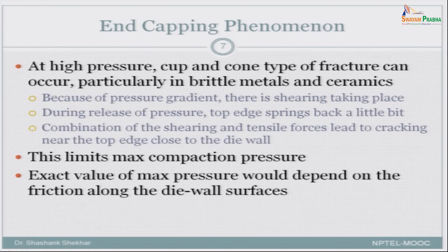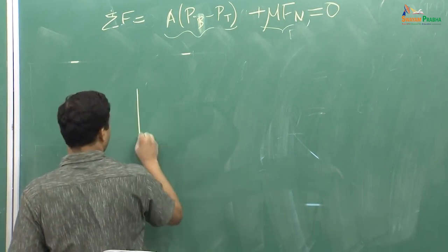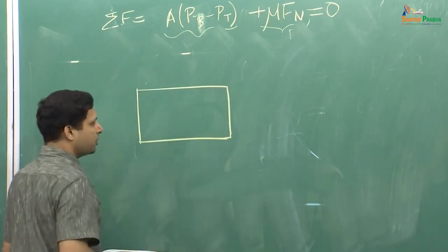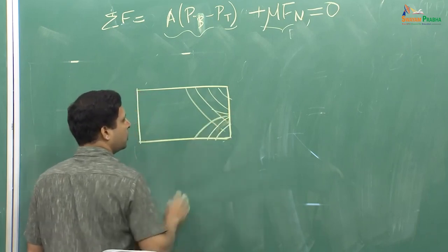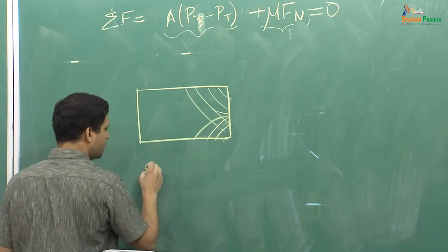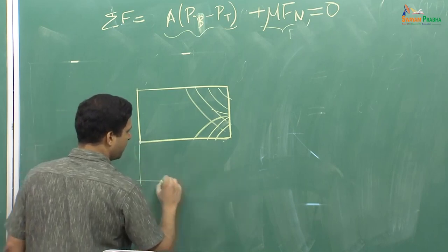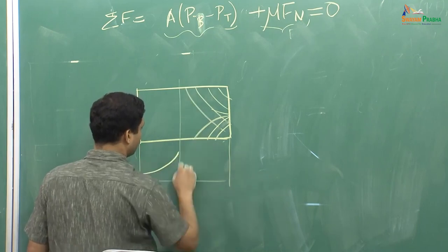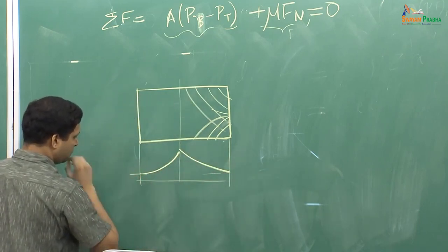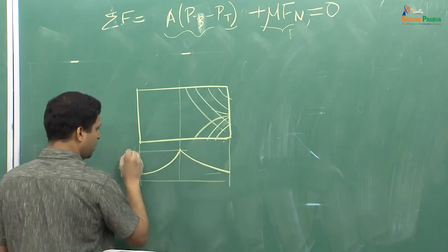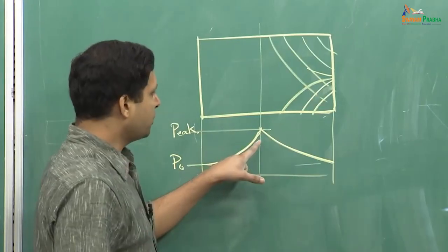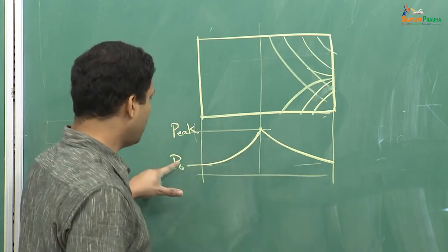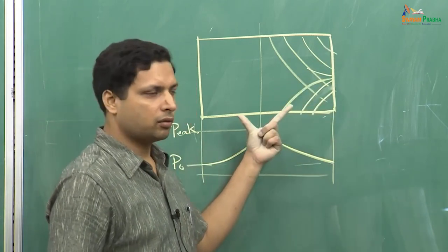Next is, when we are doing compaction, there is another important aspect called the end capping phenomenon. Let us say you have a compact — there is a pressure variation along this, as we have already seen. There is also a pressure variation along the radius. If you look at the pressure variation like this, on the edges you have applied pressure, but towards the center you have a peak pressure.